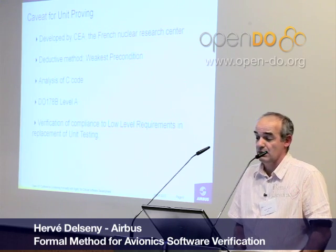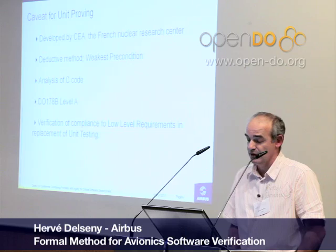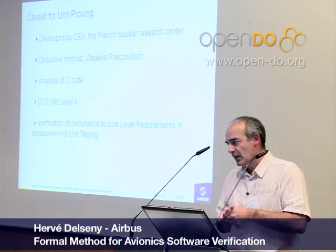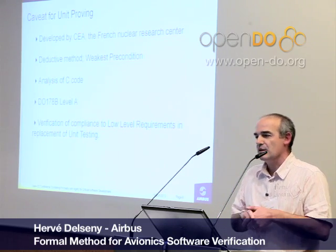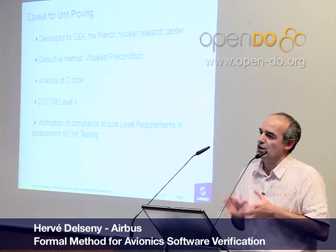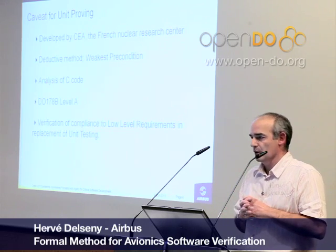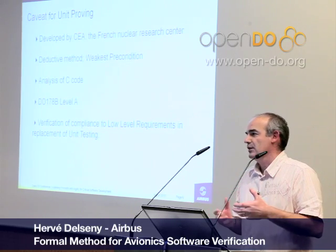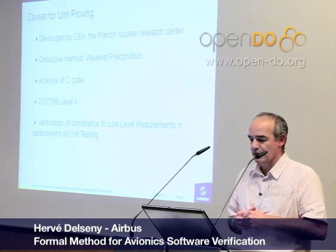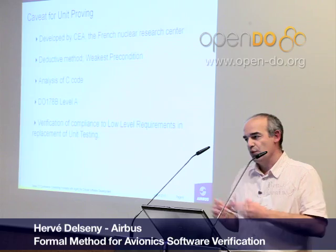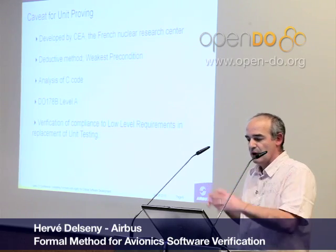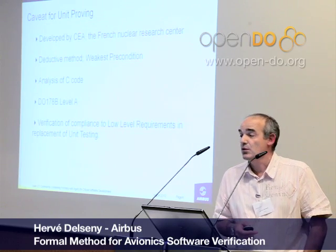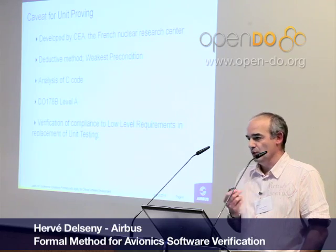The subset on which we use CAVEAT is what we call the auto-test, or safety-test software. This is a subset that runs during power-on of the computer to test whether the hardware is functionally correct. We use CAVEAT to prove, during unit proof, that this subset is compliant with its low-level requirements. The aim is to avoid performing unit testing altogether.